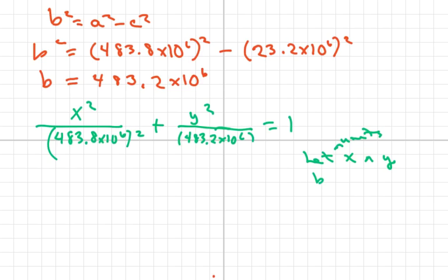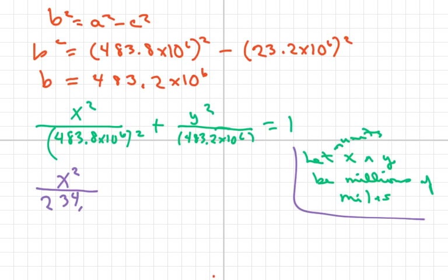let the units for x and y be millions of miles. You don't have to, but if you want to do that, it looks nicer. You're going to have x squared over 234,062.44 plus y squared over 233,524.2 equals one.